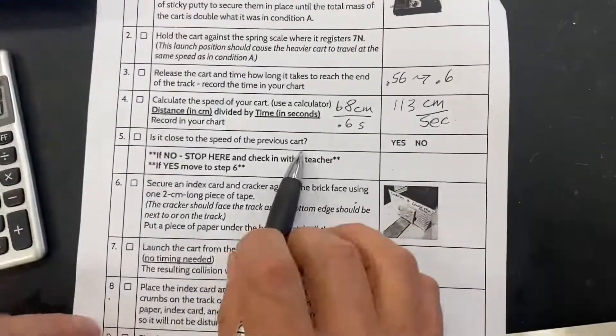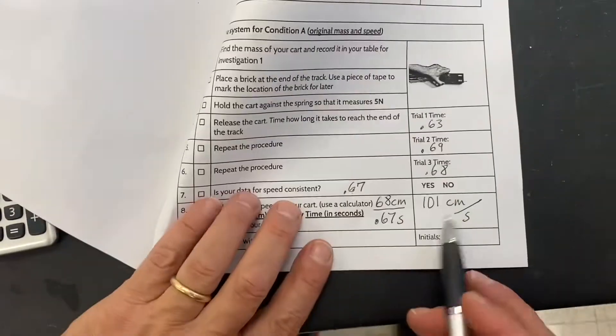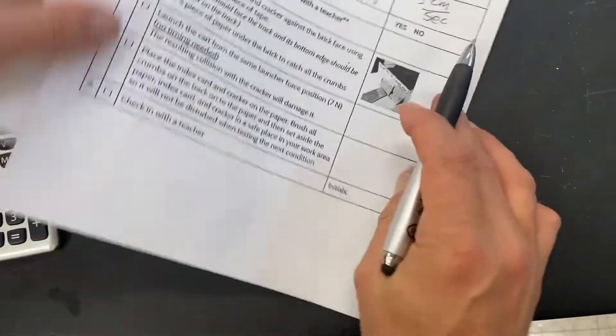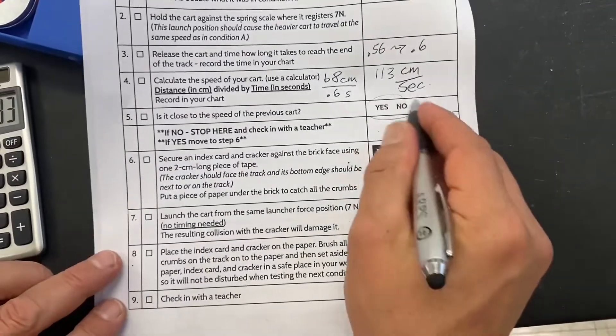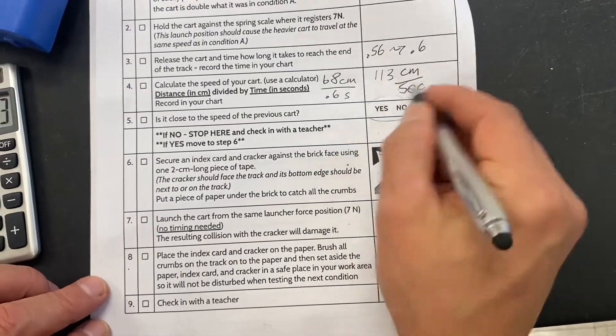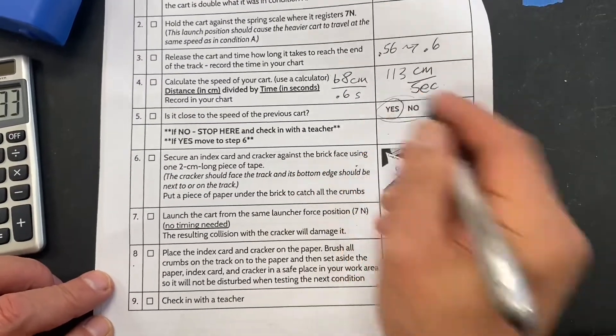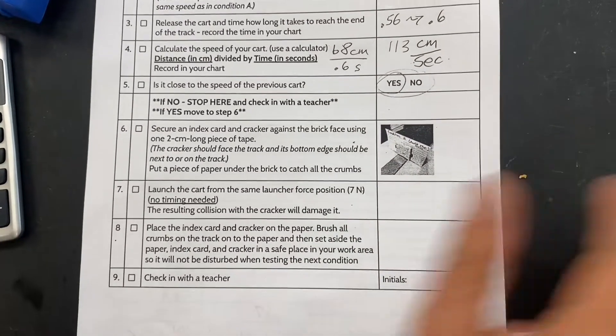So is it about the same speed as the previous thing? This is 100. This is 113. You can decide whether you think yes or no. Within our error and all that, I'm saying yes to this question because it's about the same speed. Agreed. All right. Now we're going to do this.